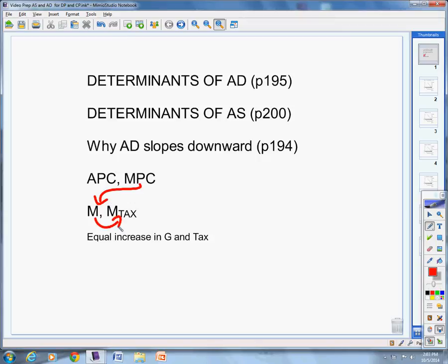And you also need to understand if we have an equal increase in government spending and taxes that GDP will increase by whatever the government spends by G spending. If it's 10 government spending, 10 tax, GDP increases by 10.